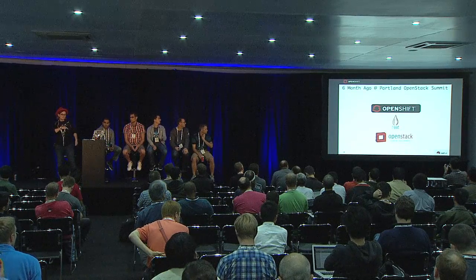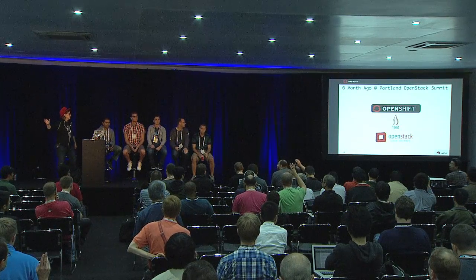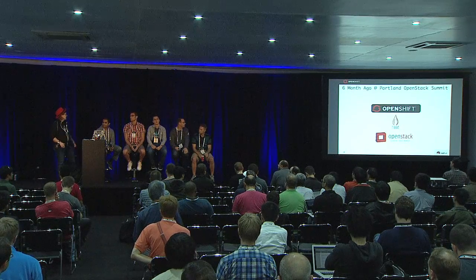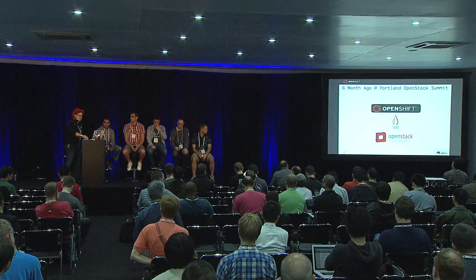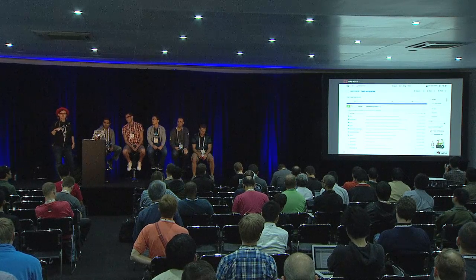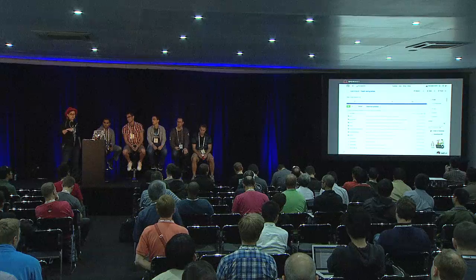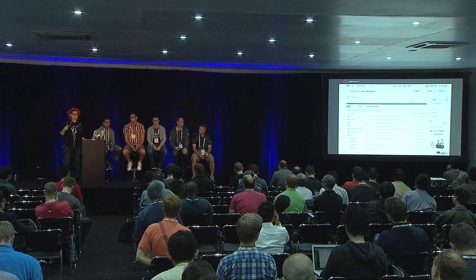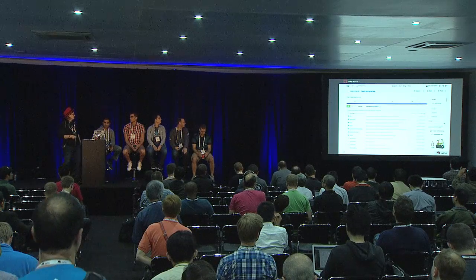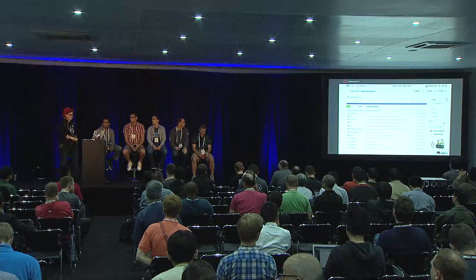Six months ago in Portland, we did a keynote demo where Brian Stevens stood up and showed a demo that actually worked. We took Heat to deploy and start auto-scaling OpenShift natively on OpenStack. Our commitment at that time was to make sure those templates were production-ready and included in RDO and the upcoming releases. I'm here to tell you we delivered on that. If you go into the OpenStack Heat templates, you'll see two sets — one for Enterprise and one for Origin.